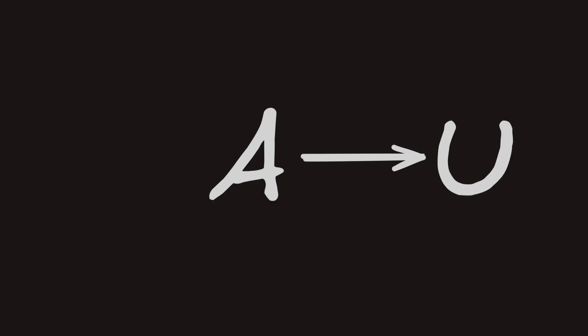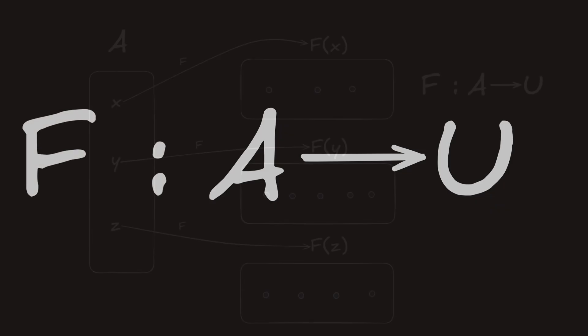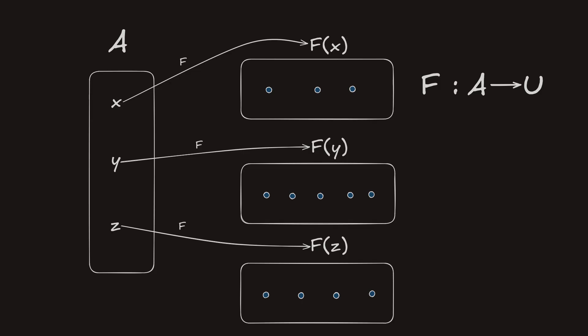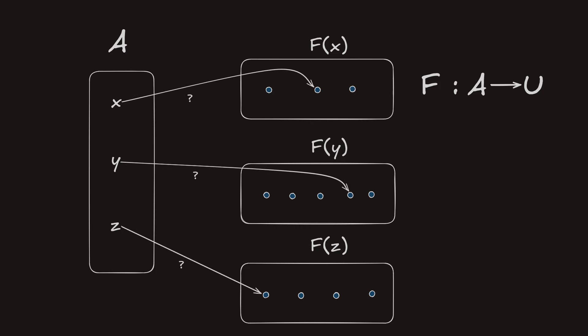Suppose we had a type family, capital F. F would then map every term of A to some type. But we can go one step further — not only can we map to a type in a type family, we can map to a term in a type family. To understand how this is done, we need to take a look at an indispensable tool used by type theorists: the pi type.